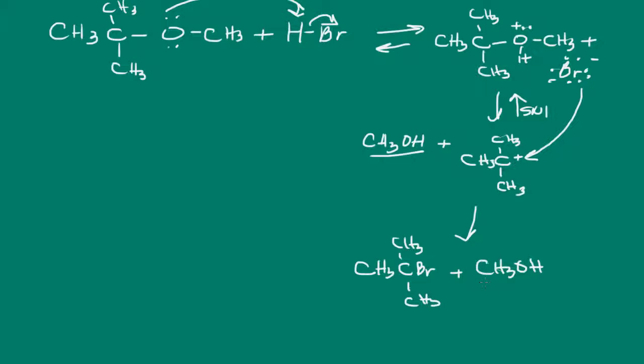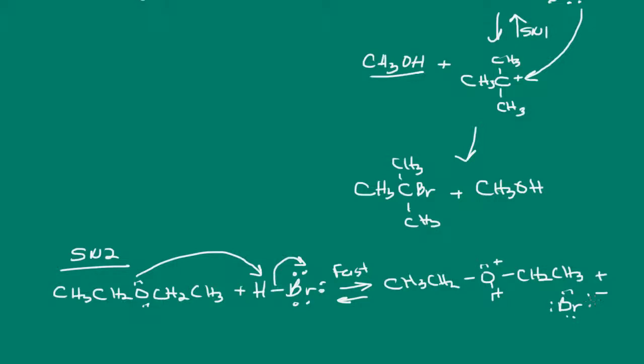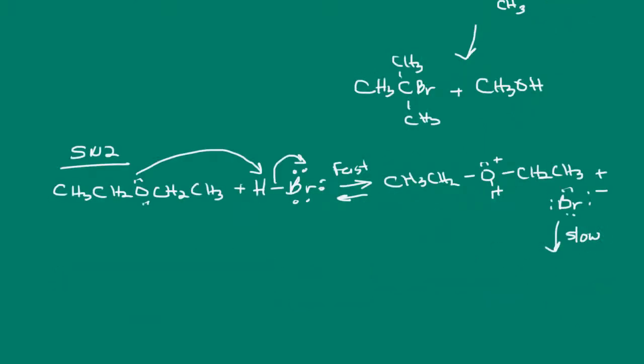Now, if a stable carbocation cannot be formed, then the SN2 mechanism will be followed. So, let's go ahead and look at diethyl ether. Notice we have a symmetrical ether here, and so, of course, we would react that with hydrogen bromide. Again, the first step is the protonation of the ether. I want to convert that alkoxy group into a good leaving group. Slow step here. And, of course, we have our alcohol. We end up with our alcohol, and ethyl bromide as our alkyl halide.